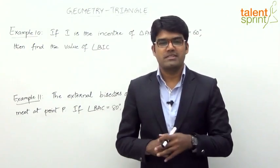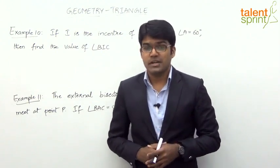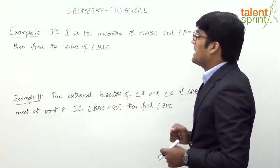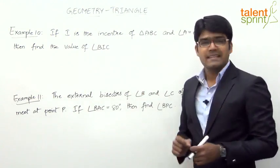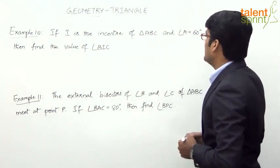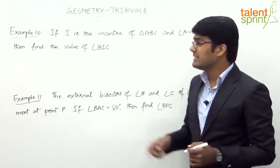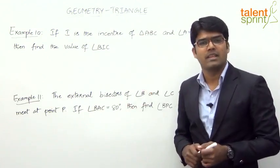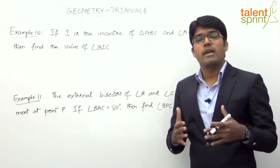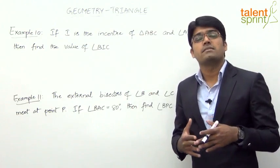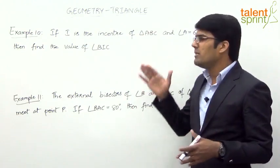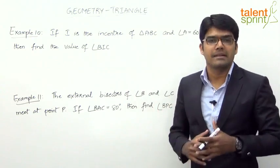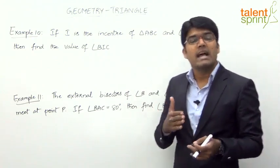Let us now look at the next two questions, both of which are based on the incenter of a triangle. Example 10: If I is the incenter of triangle ABC and angle A is 60 degrees, then find the value of angle BIC. If you have followed the points discussed during the incenter topic, you will be able to mark the answer without even drawing any diagram.